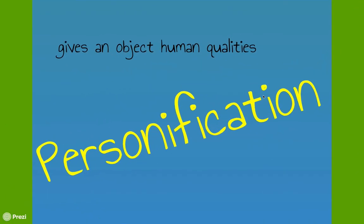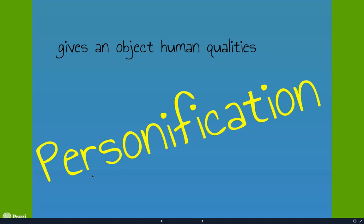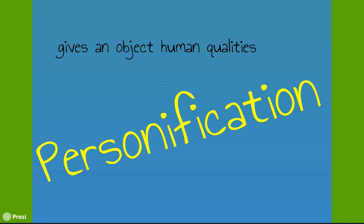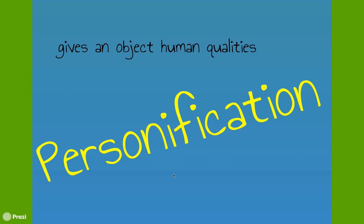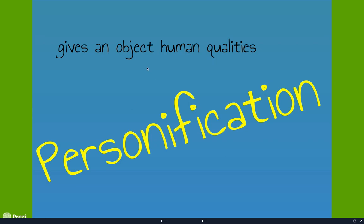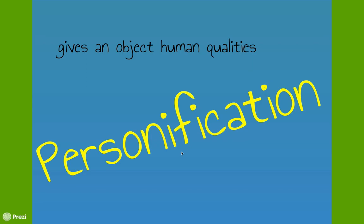Personification is next. The root word is 'person,' so it's when you give person-like or human-like qualities to something that's not human, like an object. For example, 'the trees danced' — trees don't actually dance, but they look like they're dancing in the wind. That's personification.